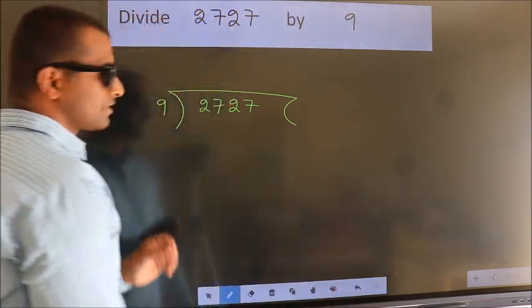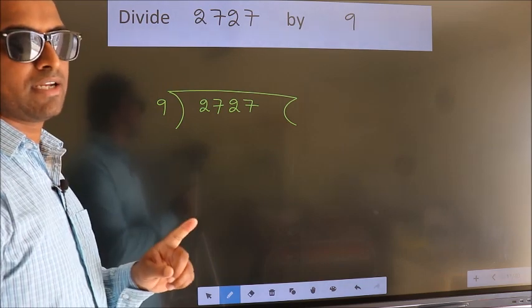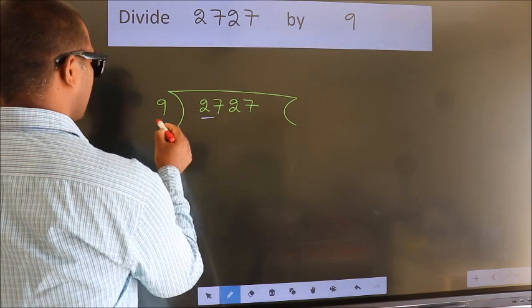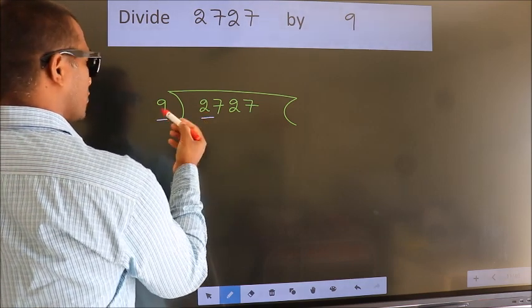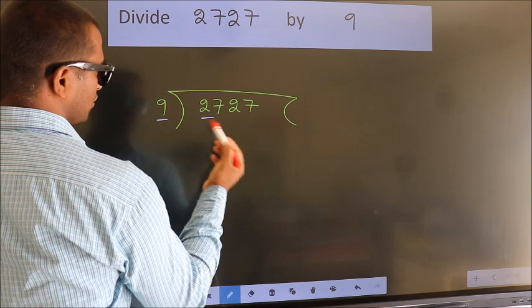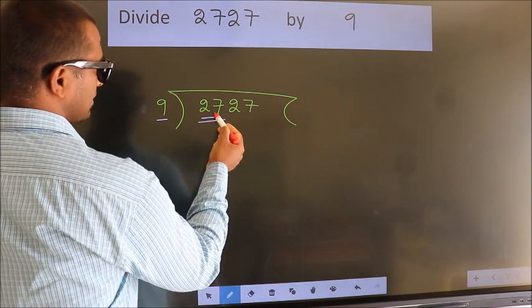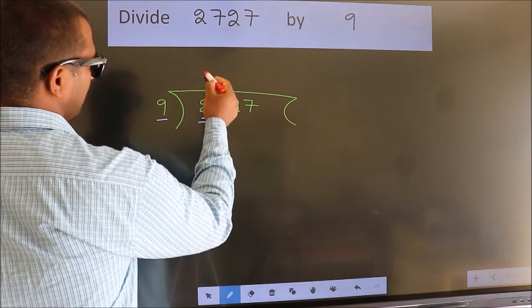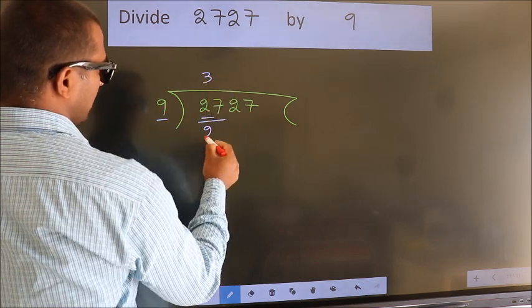This is your step 1. Next, here we have 2. Here 9. 2 is smaller than 9. So we should take 2 numbers: 27. When do we get 27 in the 9 table? 9 threes, 27.